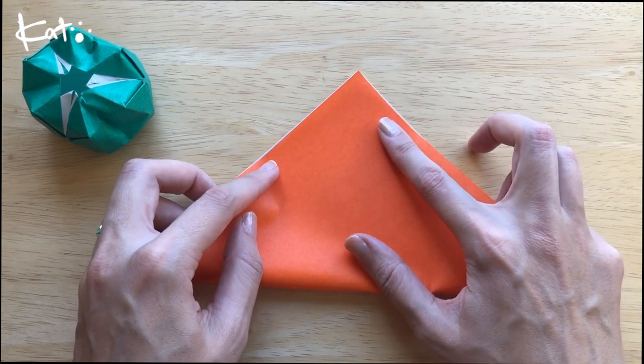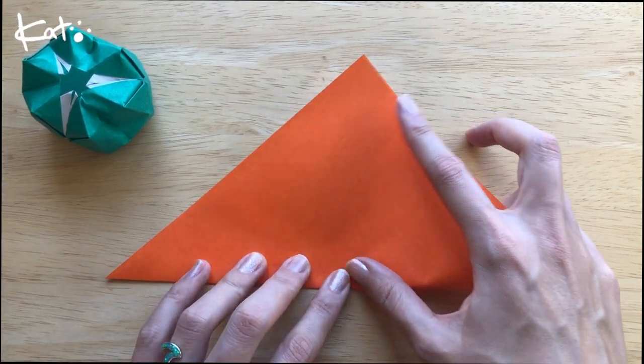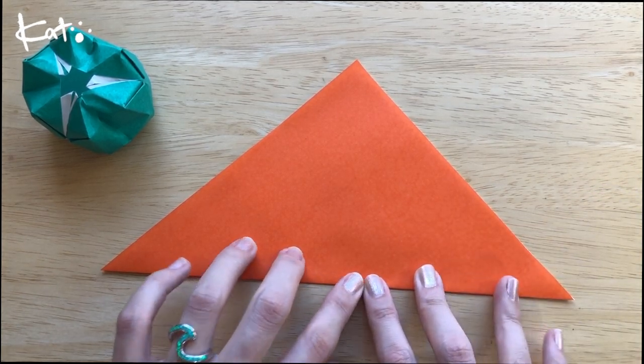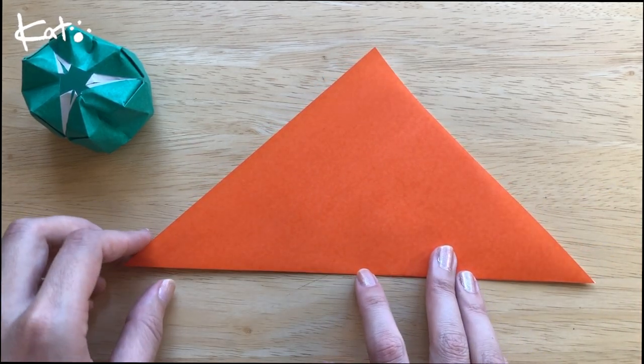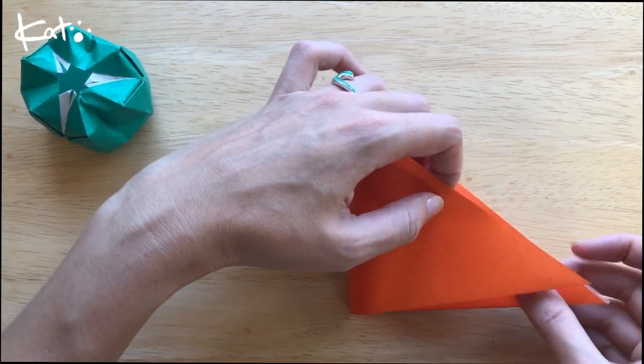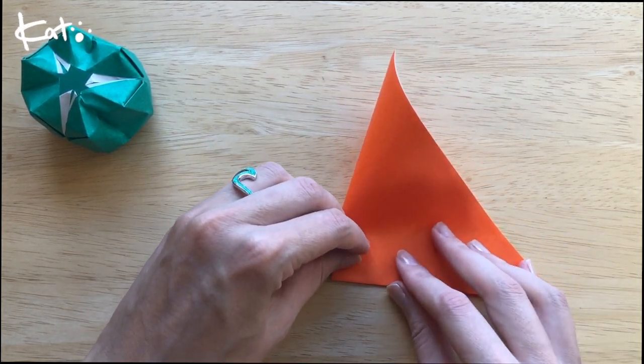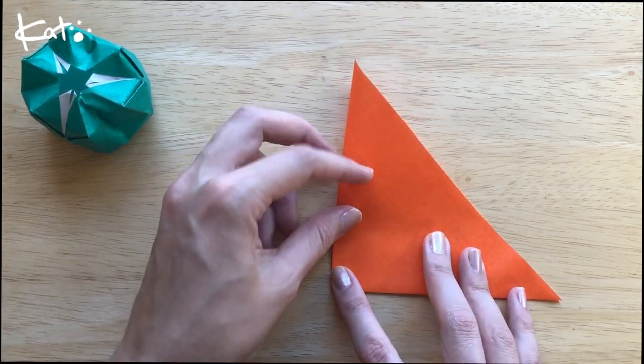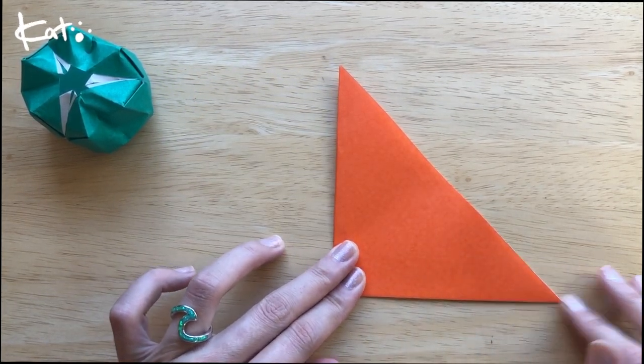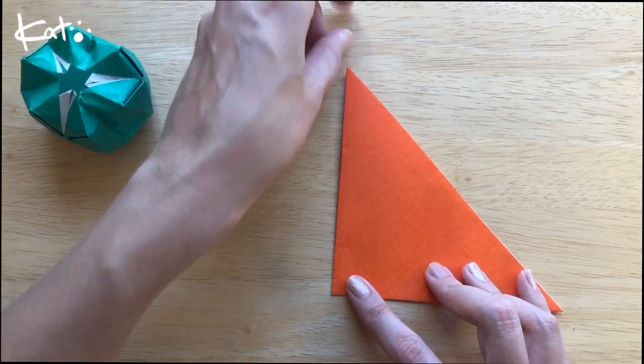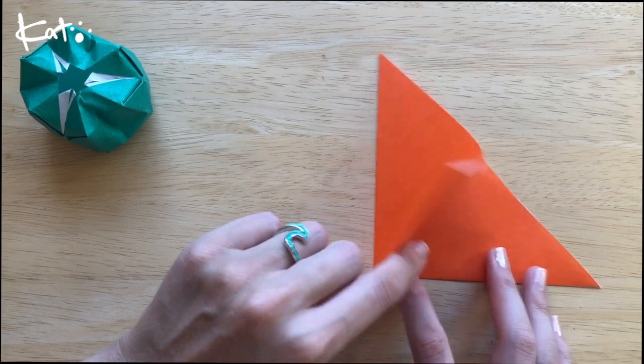Put the colored side down and you're going to fold it into half into a pyramid. Take the corner and fold it in half again. Open it up.